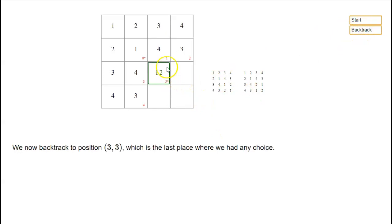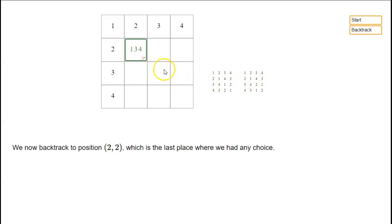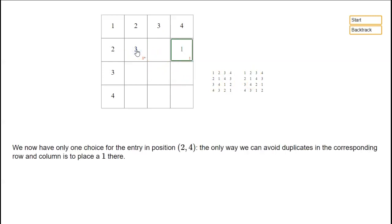So we can backtrack to the last place where we had a choice. Here we could have a 1 or a 2, but we've tried both of those possibilities already. So let's backtrack to the previous place where we had a choice, which is all the way back here at stage 0. We had a 1 in that slot and have done all the possibilities with choosing 1. So now instead we're going to choose a 3.